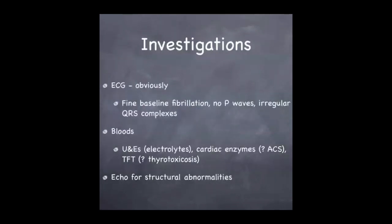The most important investigation is an ECG, and there are three features to look for: fine baseline fibrillations, lack of P waves, and irregularly irregular QRS complexes. You also want to do blood tests — specifically a U&E to look for those electrolyte aberrations, particularly potassium and magnesium — cardiac enzymes because the atrial fibrillation may have been set off by an ischemic event or may be causing ischemia, and thyroid function tests to look for thyrotoxicosis. You also want to arrange an ECHO to look for any structural valvular or myocardial abnormalities that may be contributing to the fibrillation.